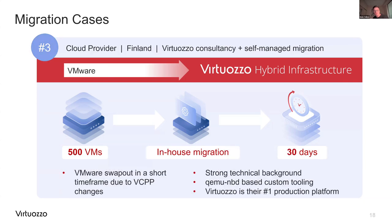The third case is a very technical cloud provider from Finland who was looking for a full VMware swap-out in a short timeframe due to VCPP changes. These guys had an awesome technical team with really extensive knowledge, and it was clear from day one they would be managing the migration themselves — but with Virtuoso consultancy, mainly around the destination plan: platform architecture, hardware reviews, platform audits, and health checks. As a result, they migrated 500 VMs in 30 days, and VHI is now their number one production platform.